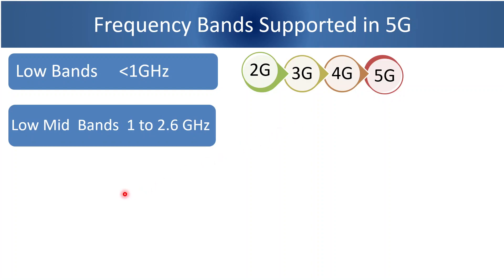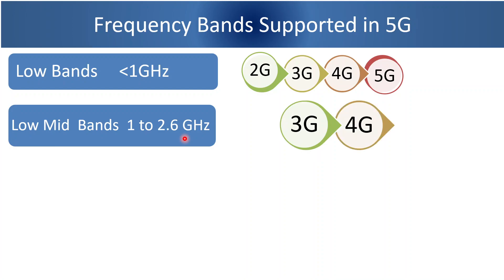The lower side of mid bands are from 1 GHz to 2.6 GHz. At present, 3G and 4G systems are operating on these bands. 5G also supports these bands.